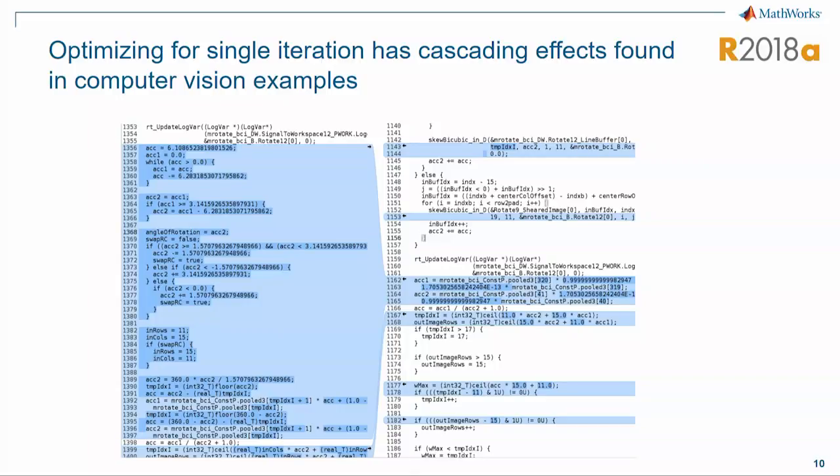This is an example from computer vision where that optimization kicked in and because we were able to eliminate that control flow the rest of the compiler was really able to optimize this code a lot better. It could do a lot more constant propagation and expression folding.